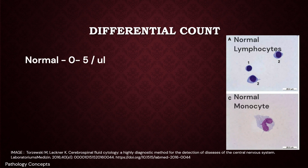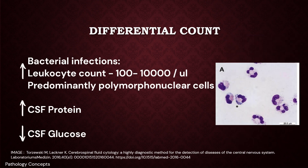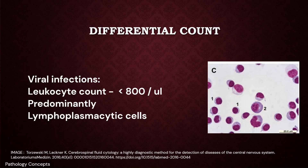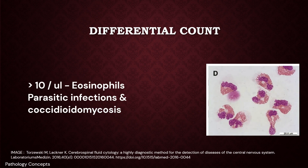A CSF leukocyte count of 0–5 cells per microliter is normal and excludes CNS infection. Acute bacterial infections show increased leukocyte counts from 100 to 10,000 cells per microliter with predominant polymorphonuclear cells, increased CSF protein, and decreased CSF glucose. In contrast, viral meningitis shows WBC counts less than 800 per microliter with lymphocytic predominance and slightly decreased or normal CSF glucose. The presence of more than 10 eosinophils per microliter is seen in parasitic infections and coccidioidomycosis.